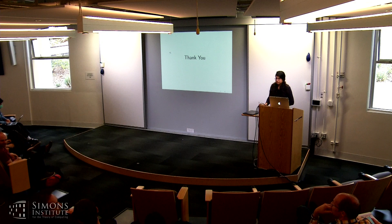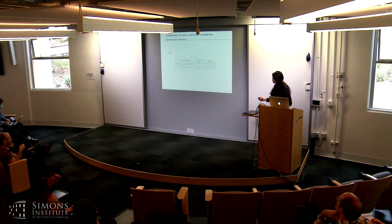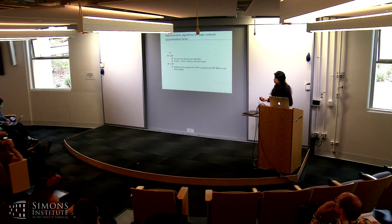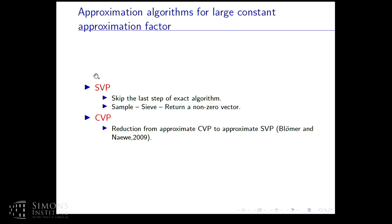We have time for questions. A question was asked about the reduction from approximate CVP to approximate SVP. This reduction was given by Blömer and Naewe, a polynomial-time reduction in the LP norm: we can use any oracle for approximate SVP to solve approximate CVP. The approximation factor in CVP is something like 1 + ε, and it is not an exponential-time thing. Thank you all very much.